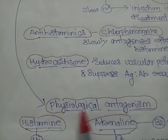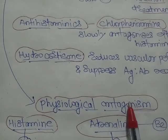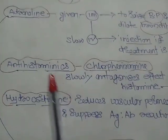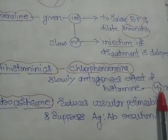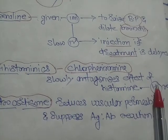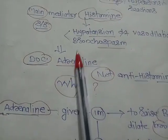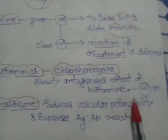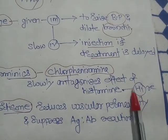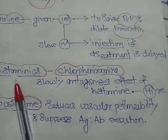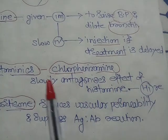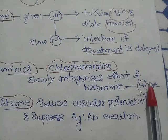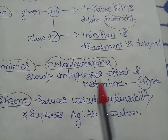The reason relates to physiological antagonism. If you give antihistaminics, they act on H1 receptors, but these H1 receptors are already occupied by histamine, because histamine has already been released. So antihistaminics first have to displace that histamine before acting on the H1 receptor — meaning it will take time and slowly antagonize the effect.